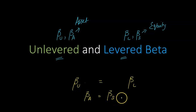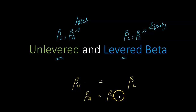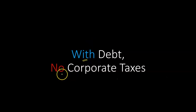But what happens if the firm's assets are partly funded with debt and partly funded with equity? How does the relationship between asset beta and equity beta change as a result? That's the question we're going to address in this video — the relationship between asset beta and equity beta when there is debt, still assuming no corporate taxes for simplicity.